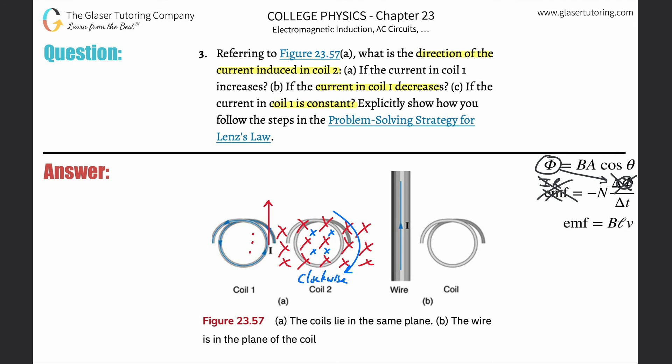For letter C, the answer is there is no induced current. Thanks for tuning in — hopefully that helps. Check out some of our other videos, we'll see you soon!